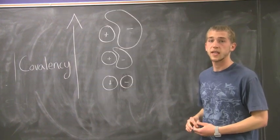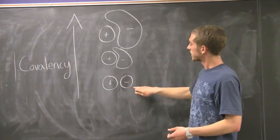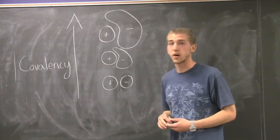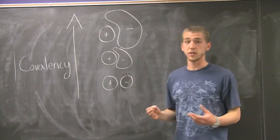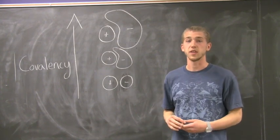He also observed that as the size of the anion increases, the tendency for the bond to be covalent increases as well. This can be understood through the shielding effect within the anion.